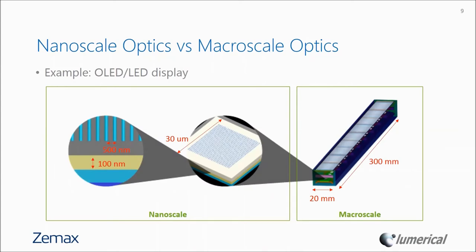OLED and LED displays are an example application where both nanoscale and macroscale optics are required for optimizing device performance. You would use ray tracing methods to design your macroscopic device — in this case a lamp with dimensions 20mm by 300mm. When you zoom into one of the pixels, these devices often have very thin layers, tens or hundreds of nanometers thick, and sometimes nanoscale structures like photonic crystal patterning with dielectric rods placed about a few hundred nanometers apart.